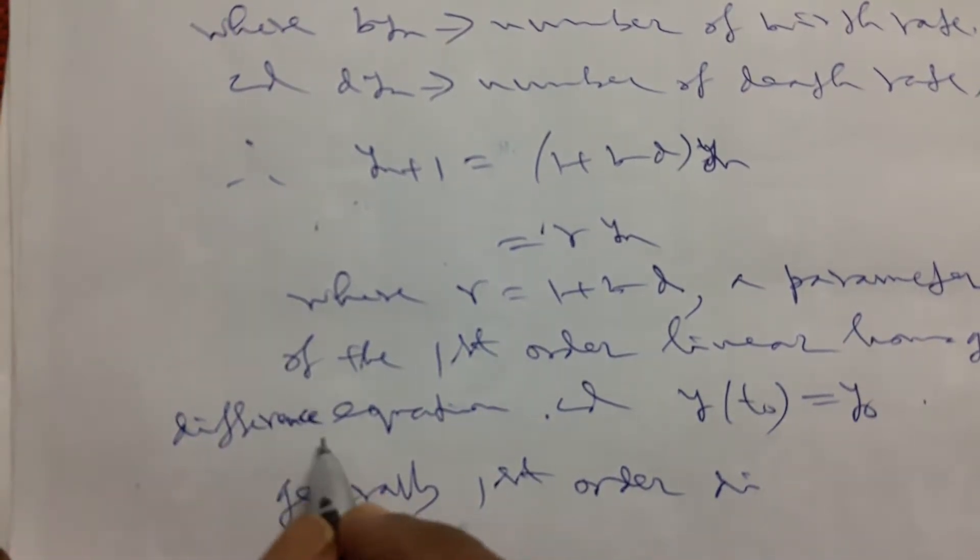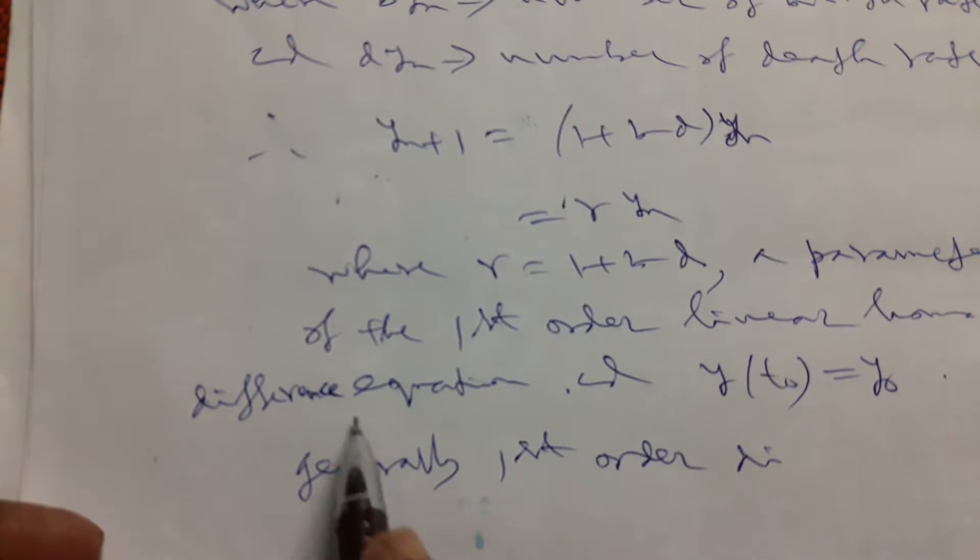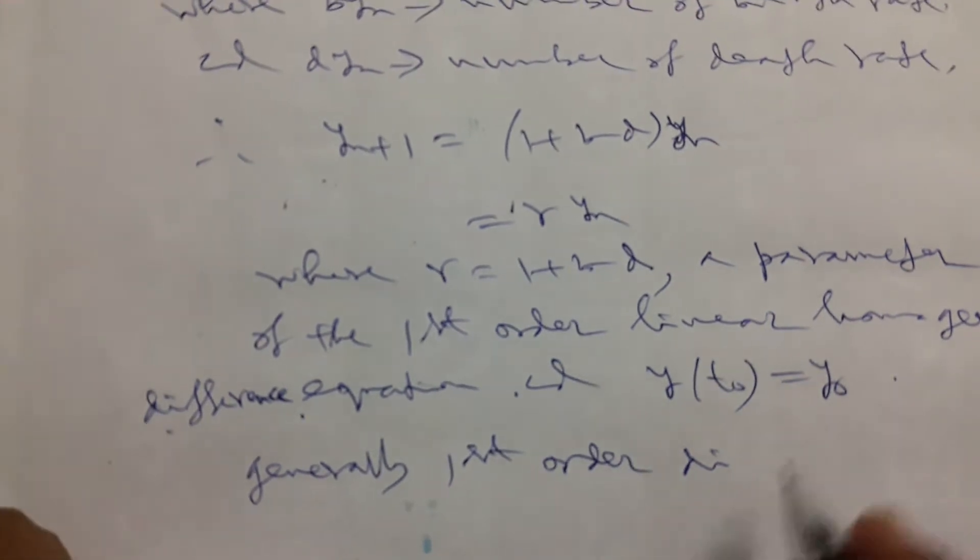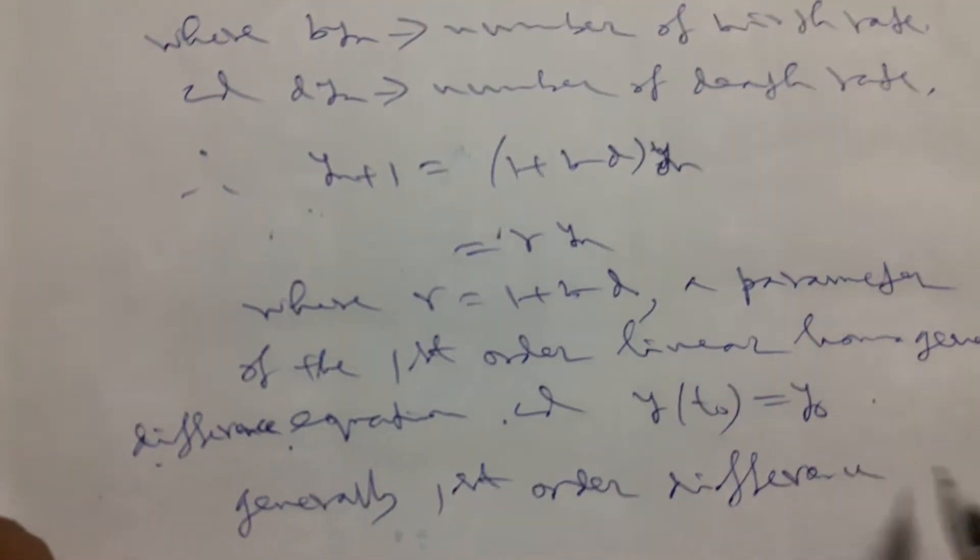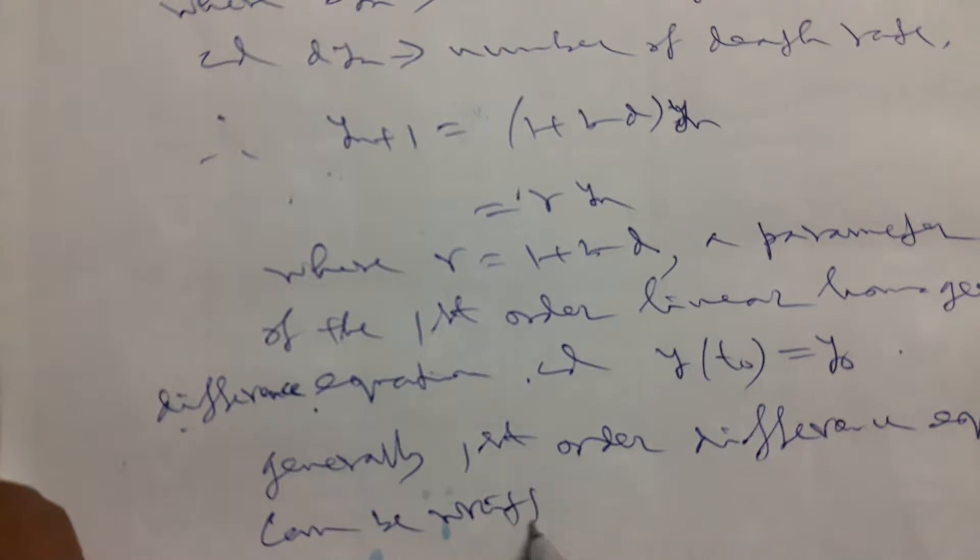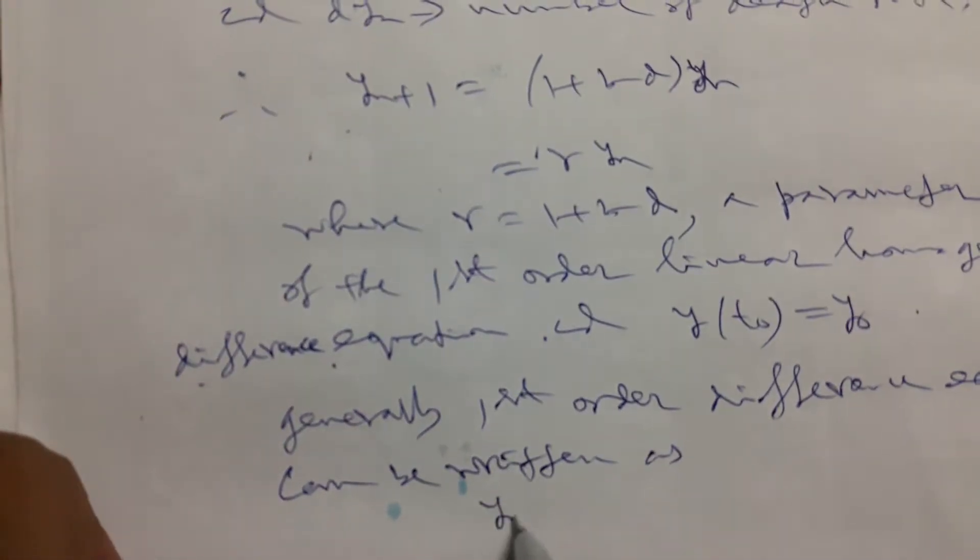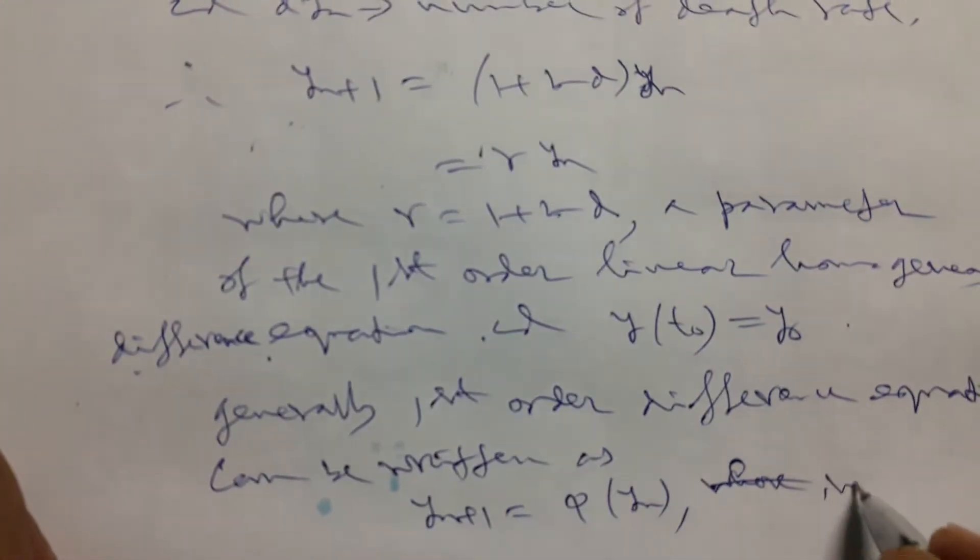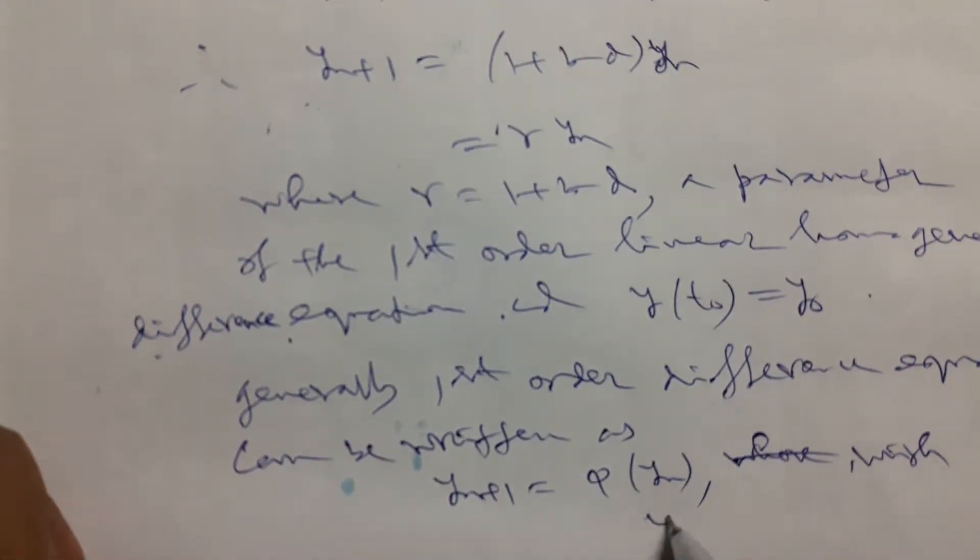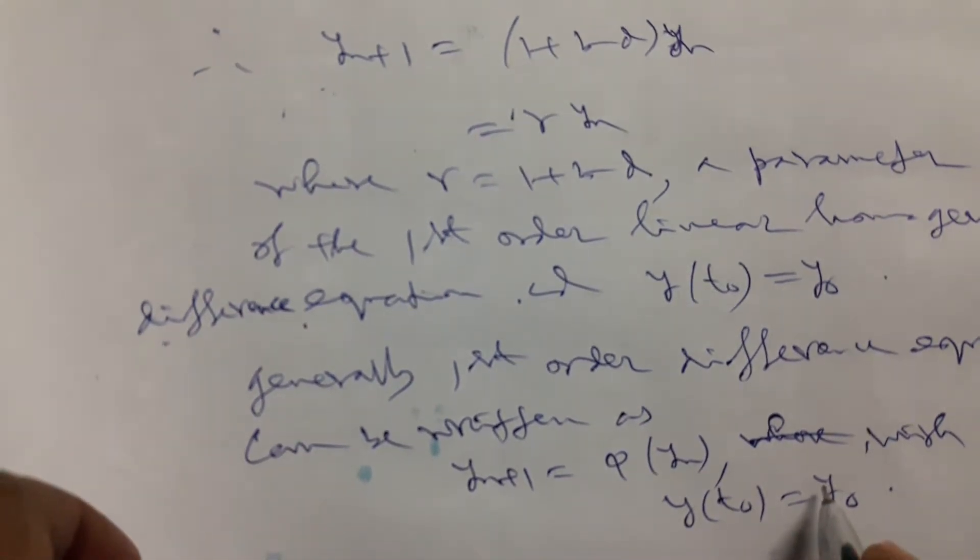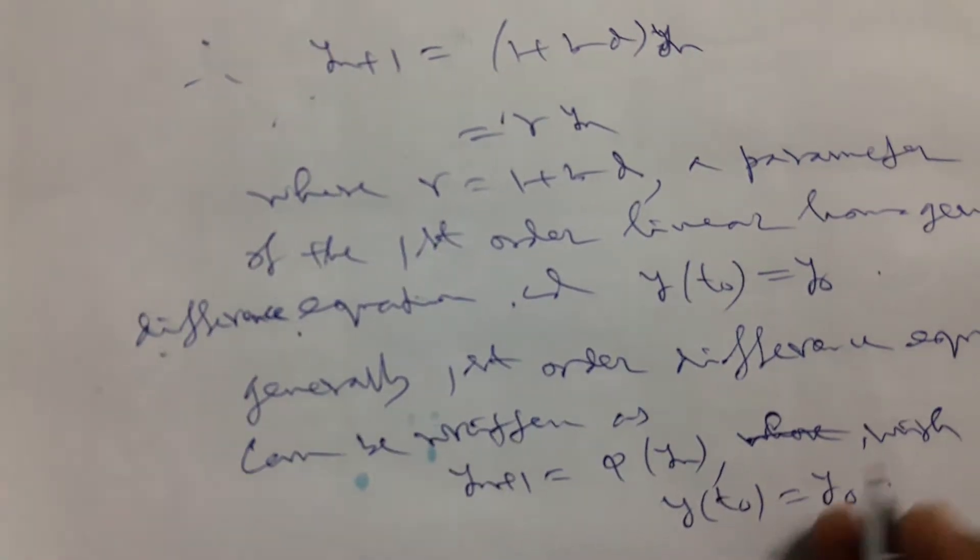But in the earlier stage, if we consider the single species population for continuous time model, then this equation was the differential equation. But here we find difference equation. Now generally, first order difference equation can be written as y_{n+1} equals φ(y_n), where we find that condition with y(t_0) equals y_0, initial condition. This is equation where the new value of y is determined completely by the previous value.